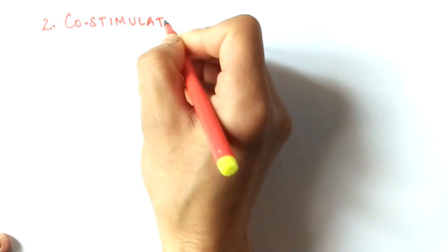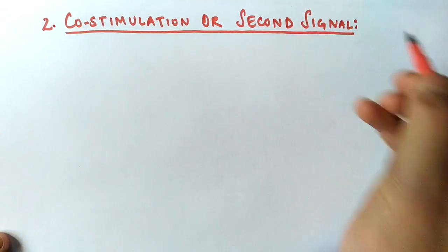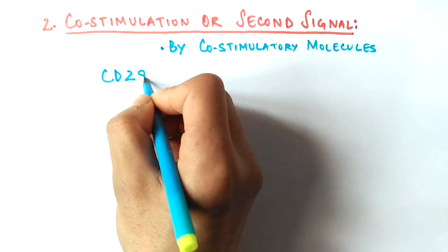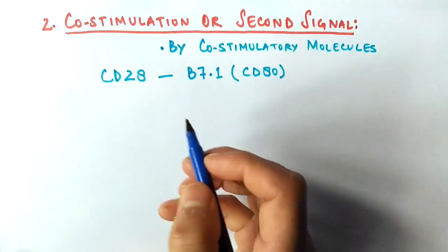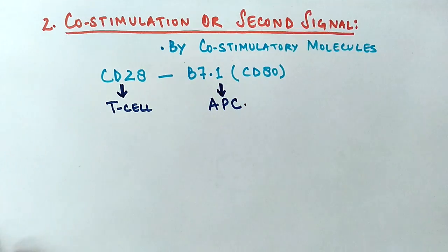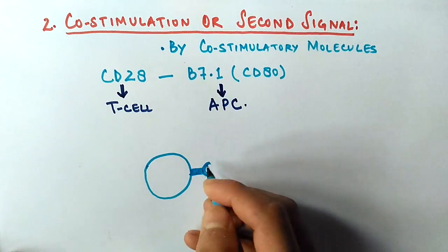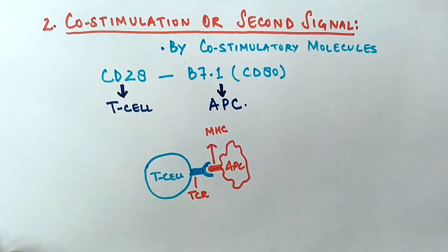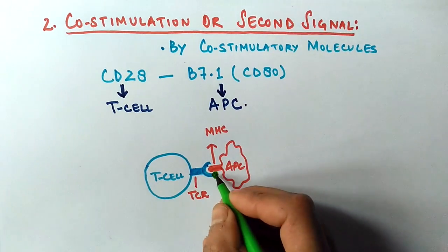Then we have the second signal in the form of co-stimulation by co-stimulatory molecules. We have different types of molecules present on these immune cells. We have CD28 molecule present on T cell, B7.1 molecule also called CD80 molecule present on antigen presenting cell. So these molecules provide a co-stimulated effect on the previous signal to enhance it.